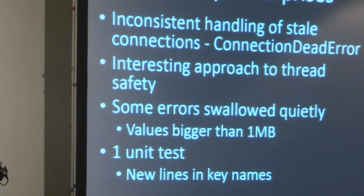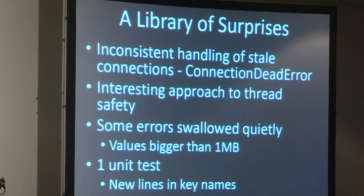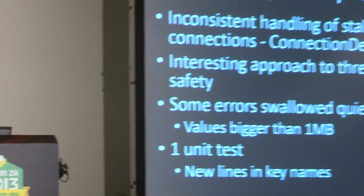Having something in the wild for a while, we started to bump into surprises in our client library: inconsistent handling of stale connections — one system not used 24/7 would be left unused for about 12 hours, and in the morning when people started using it they'd see connection dead errors and had to restart all services to make it come alive again. An interesting approach to thread safety in python-memcached. Some errors swallowed without raising exceptions. And one unit test. There have been one or two bugs introduced along the way — most recently, newline characters are important in the memcached protocol, and they used to notify you if you had a newline in your key name, but no longer — now it just breaks the protocol.